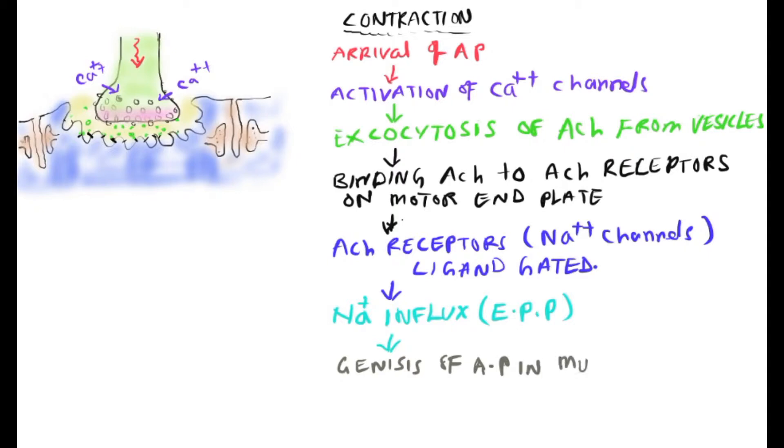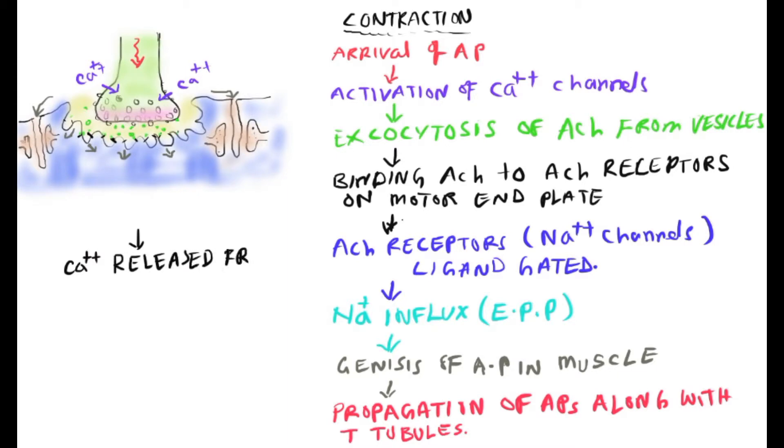The sodium influx and positive charge entry inside the muscle fiber brings about the reversal potential. Once the action potential is generated, it propagates across the muscle fiber in all directions from the terminal bouton, aided by the sarcoplasmic reticulum T-tubular triad system. Calcium is then released from the sarcoplasmic reticulum.